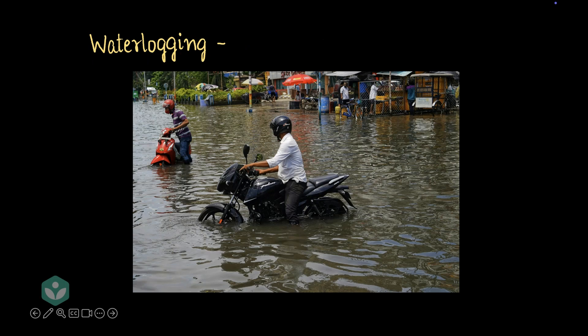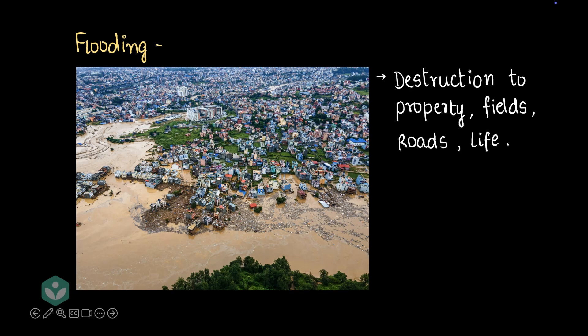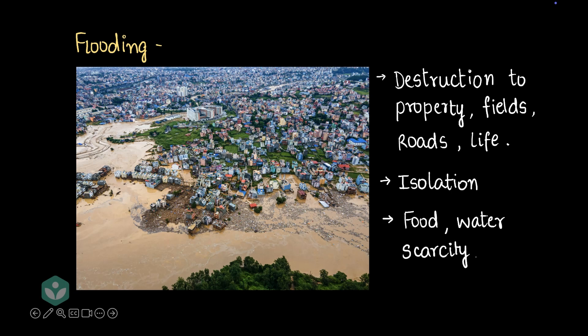After a cloudburst, waterlogging happens, and from up above, this is how that looks. There are a lot of issues to tackle when there is flooding — destruction to property, fields, roads, and life. Everything in the way gets destroyed. This often leads to isolation, which leads to a scarcity of food and water. When roads are blocked and there's no way to reach people's homes, they don't have food or drinking water. Though you may think there's a lot of water around, all the flood water is contaminated and cannot be used for drinking.